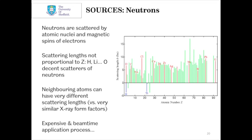Another option is to use neutrons. Neutrons are different in that they are scattered by atomic nuclei instead of electrons, and also by the magnetic spins of electrons. So you can get information about both the crystal structure and the magnetic structure using neutrons. One advantage is that neutron scattering lengths are not proportional to atomic number — so hydrogen, lithium, and oxygen are poor scatterers of X-rays but decent scatterers of neutrons. Also, with XRD it's hard to differentiate between neighbouring atoms because they scatter X-rays similarly, but neighbouring atoms can have very different neutron scattering lengths.